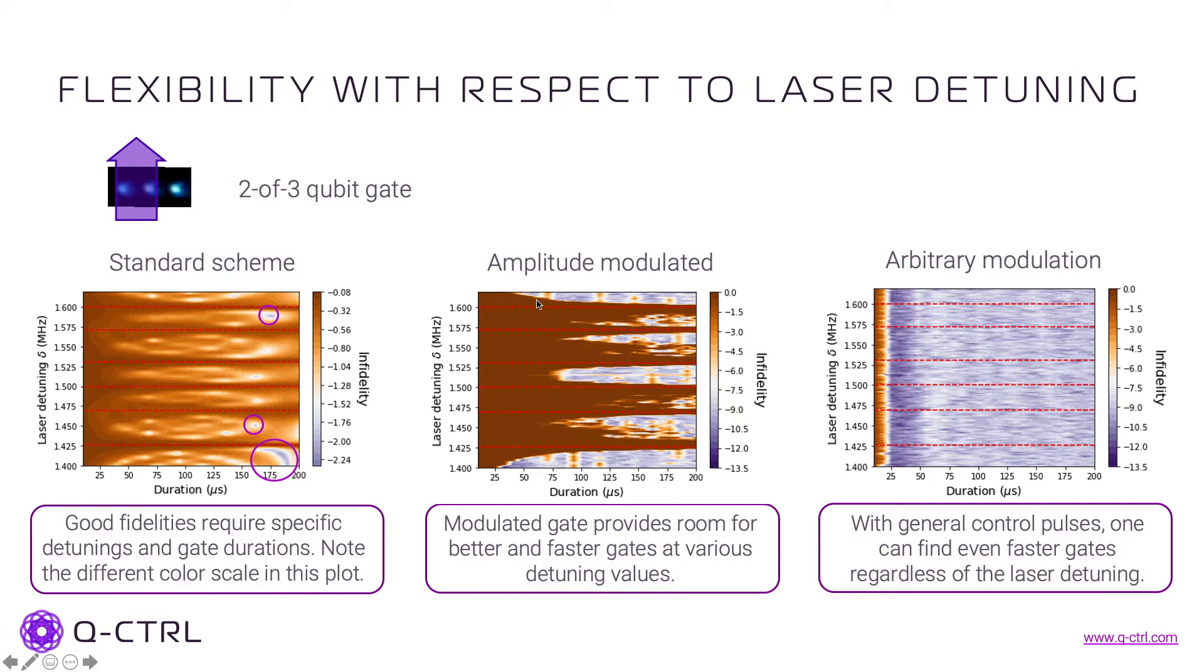And we can also actually obtain faster gates by exploring the landscape of the detuning and gate duration. Now the other interesting thing that we have here is that if we allow for arbitrary modulation, basically we can find good solutions in all regions here, and it's only limited by the duration of the pulse, so we can pretty much move all the way to the left here to find fast gates regardless of the value of the detuning.